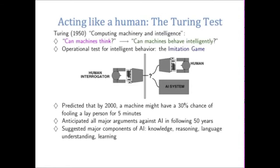Let's start by looking at those interested in having computers act like a human, and this starts with the Turing test. This is the same famous Alan Turing who gave us the Turing machine. In 1950, he wrote an important paper entitled 'Computing, Machinery, and Intelligence,' which we looked at very early on in the class.